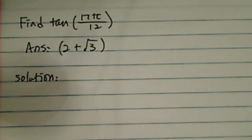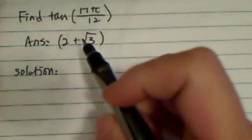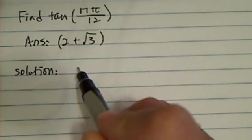The question is to find tangent of 17 pi over 12. The answer is 2 plus radical 3. This is a really good question and it requires quite a bit of trigonometry.